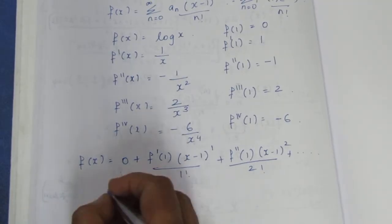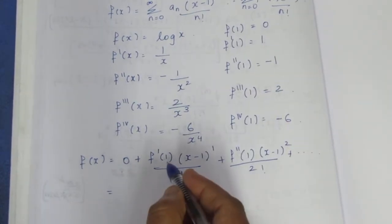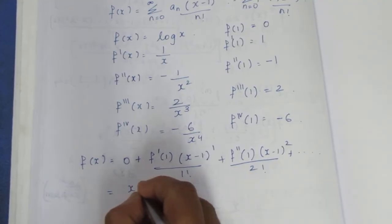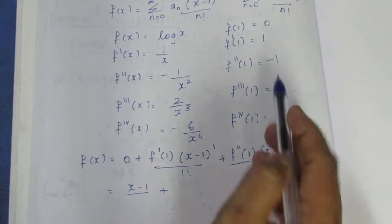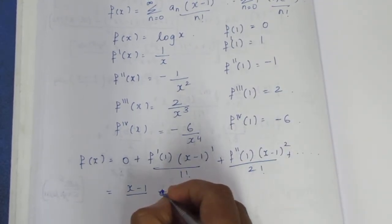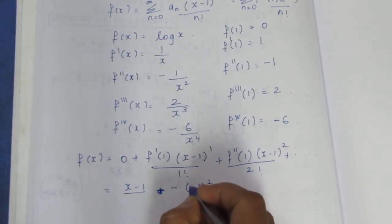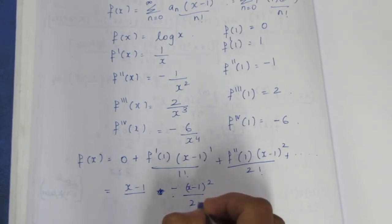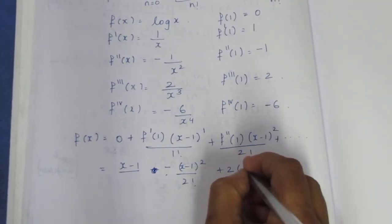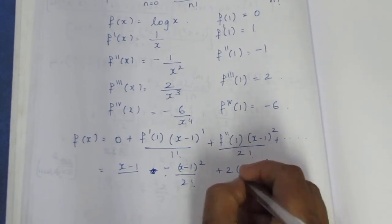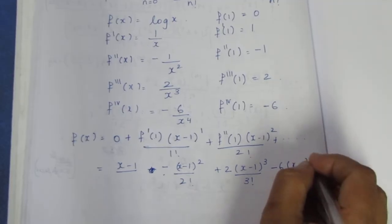Now substituting: the first term is 0. The next term: f'(1) equals 1, so we get (x minus 1) by 1 factorial, which equals (x minus 1). The second derivative is minus 1, so minus (x minus 1) squared by 2 factorial. Plus 2 times (x minus 1) cubed by 3 factorial. Minus 6 times (x minus 1) to the power 4 by 4 factorial.